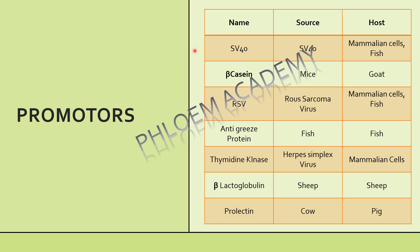Without wasting time, let's focus on a part which is highly important for your Part B. Here are some main promoters' names, their sources, where they are obtained, and which organism they can be used in. First of all, let's talk about SV40. It is obtained from the SV40 virus. It is an early promoter and can be used in mammalian cells and fish.